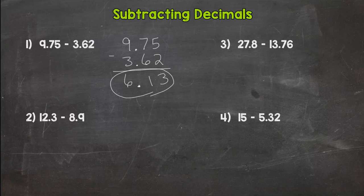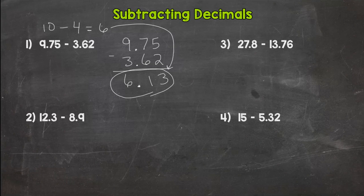Now we always check to see if our answer is reasonable or makes sense, so we're going to use estimation and rounding. I go back to my original problem and 9.75's closest whole number is ten. 3.62's closest whole number would be four. Ten minus four is six. That is my estimate. Is my answer close to my estimate? Yes, they're very close, so I have a reasonable answer.